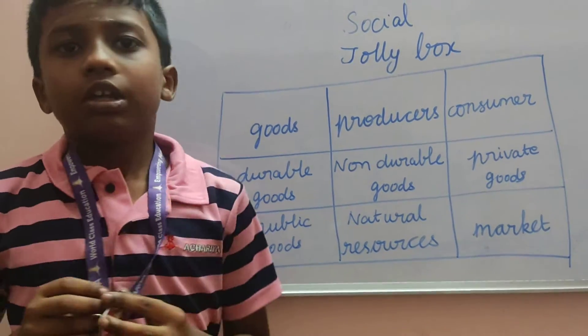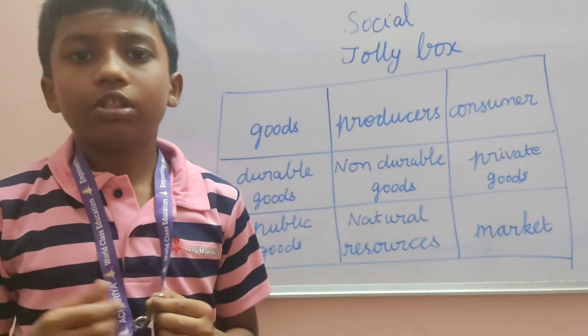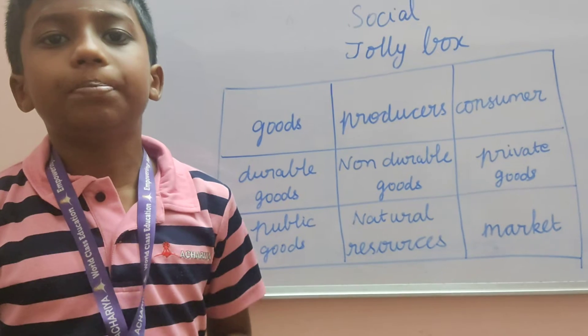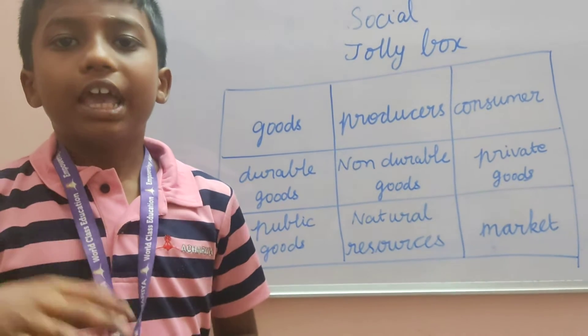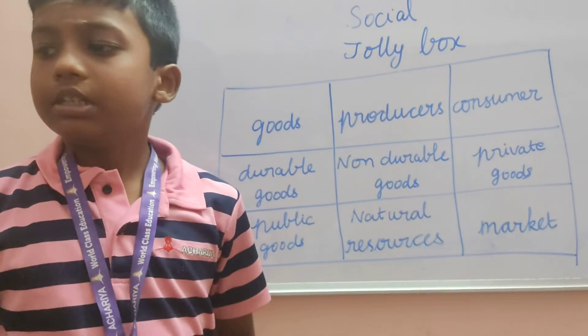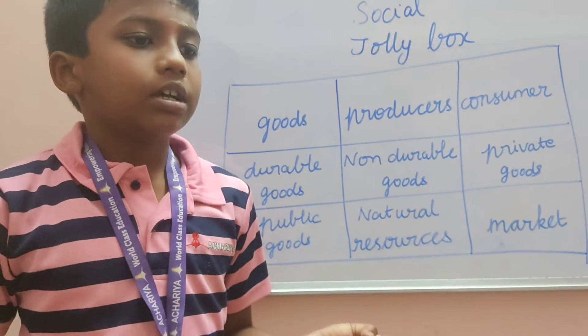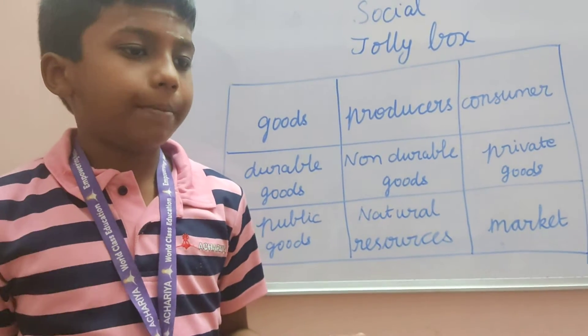Durable goods. Durable goods we can use repeatedly. Example: chair, bike, ladder.